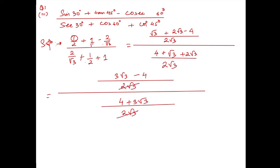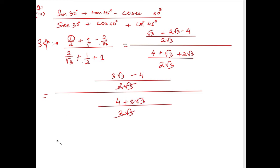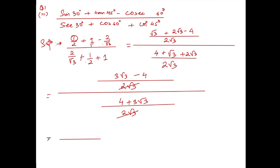So drawing a clean line, the numerator is 3√3 − 4 and the denominator is 4 + 3√3. This is the final answer. I hope the answer is correct. Thank you so much — we will meet in the next video.